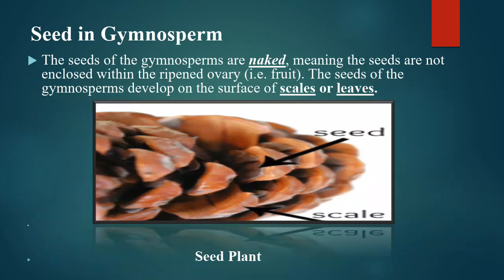Seeds in gymnosperms: the seeds of gymnosperms are naked, meaning the seeds are not enclosed within the ripened ovary. The seeds of gymnosperms develop on the surface of scales or leaves. You can observe here in the diagram.